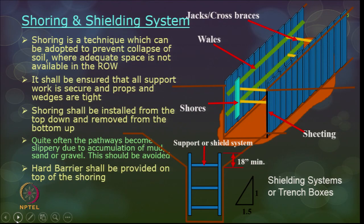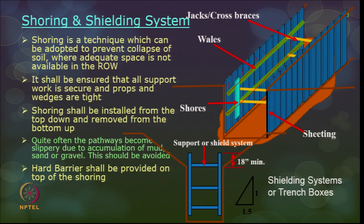Artificial systems: Number 1 is shoring and the other is shielding. Shoring is a system adopted to prevent collapse when there is no adequate right of way for natural sloping. All support work should be secured, props and wedges tight, and shoring can be installed from the top down and should be removed from the bottom up. Vertical panels are called sheeting, horizontal ones are called walers, and there are cross braces to maintain the spacing of the sheeting along with shores to handle the braces.